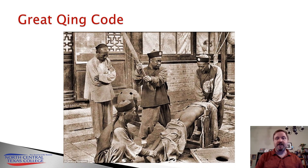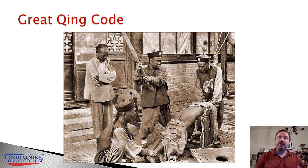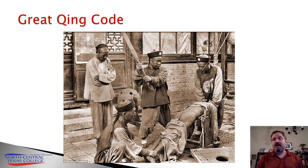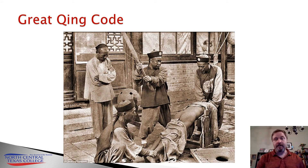Law and order in the Qing dynasty was administered through what was called the Great Qing Code, a very detailed code of laws. In the Great Qing Code, there were five acceptable forms of punishment, each with increasing severity: the lowest was a beating with a light bamboo; next was a beating with a heavy bamboo — that's what you're seeing in the picture here; next was penal servitude, basically enslavement; then exile; and finally execution.